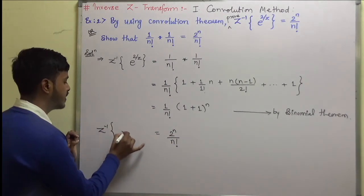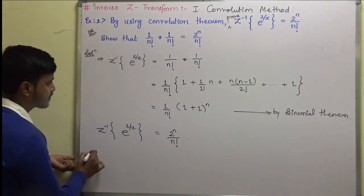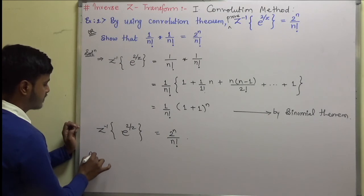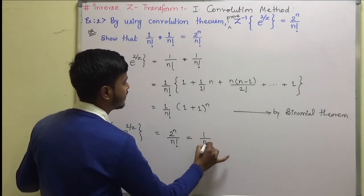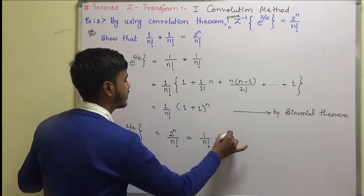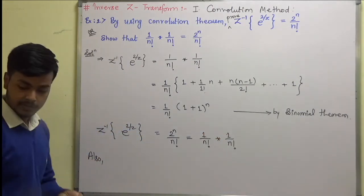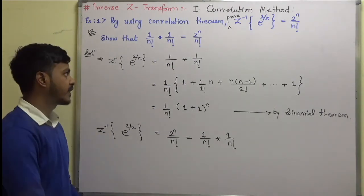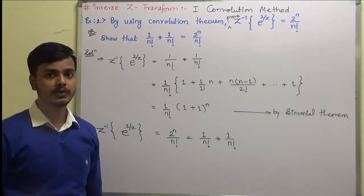So z-inverse of e^(2/z) is 2^n/n!. Also, this is the same as 1/n! convolution 1/n! = 2^n/n!. Whichever question is asked, you write down the solution accordingly.